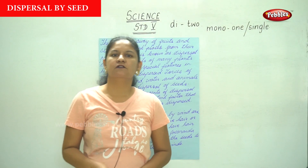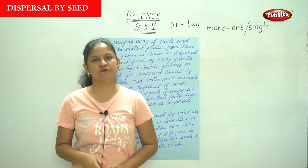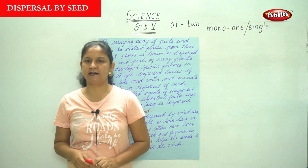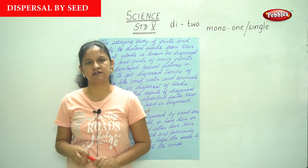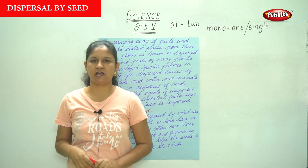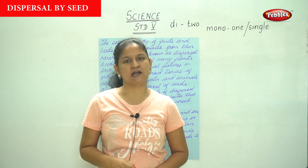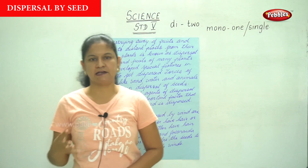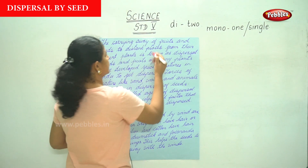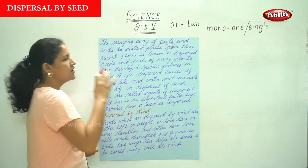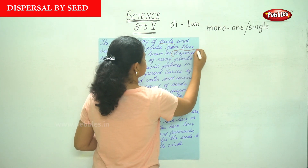If all the plants fall near the parent plant, there will be a struggle for food, water and sunlight. In this case, the seeds need to be scattered over a large area, and only those seeds which receive favourable conditions develop into an adult plant. The carrying away of fruits and seeds to distant places from their parent plant is known as dispersal.